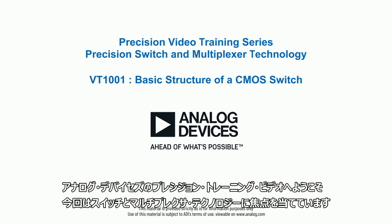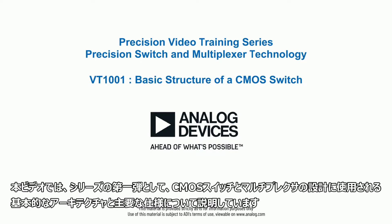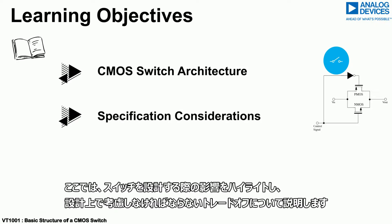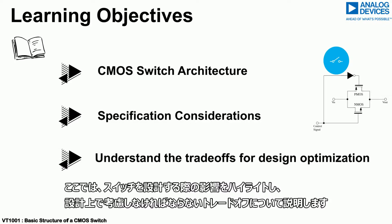Hello and welcome to the Analog Devices precision training video which focuses on switch and multiplexer technology. This video is the first in the series. We will discuss the basic architecture and key specifications used to design CMOS switches and multiplexers, highlight the impact of these when designing such a switch, and go through the associated trade-offs that must be considered when choosing for your design.